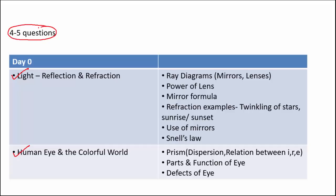From the lesson on light, some important topics are ray diagrams — you need to be thorough with how to draw ray diagrams for both spherical mirrors and lenses. Power of a lens, mirror formula, and numericals based on mirror formula. Refraction examples include short questions like why do stars twinkle, the reason behind sunrise and sunset, and why the sky is blue. Also important: use of mirrors and which kind of spherical mirror is used where, and Snell's law.